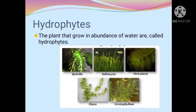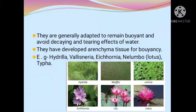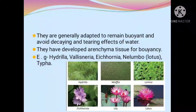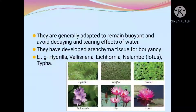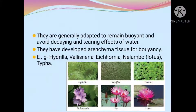The next topic is hydrophytes. Plants that grow in abundance of water are called hydrophytes. They are generally adapted to remain buoyant and avoid the decaying and tearing effects of water. They have developed aerenchyma tissue for buoyancy — that is, for floating purpose. Examples of hydrophytes include hydrilla, valesneria, eichornia, pistia, nelumbo (that is lotus), and typha.